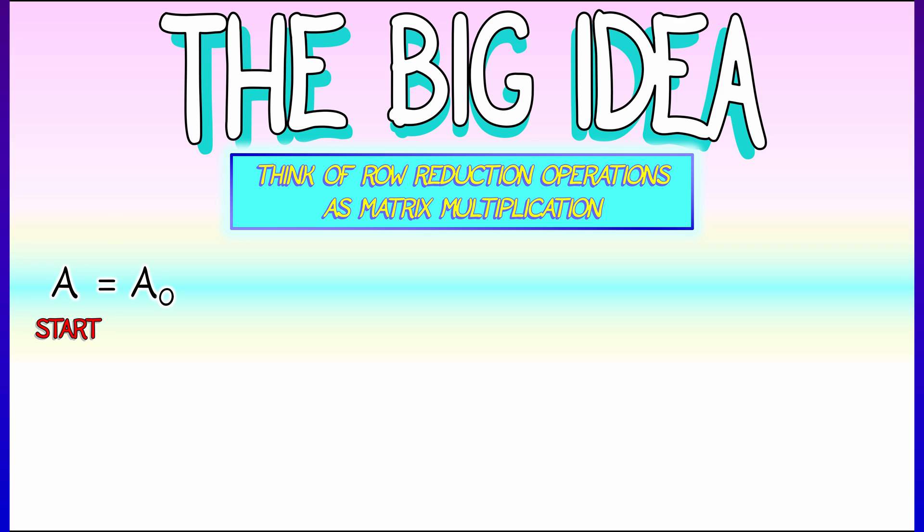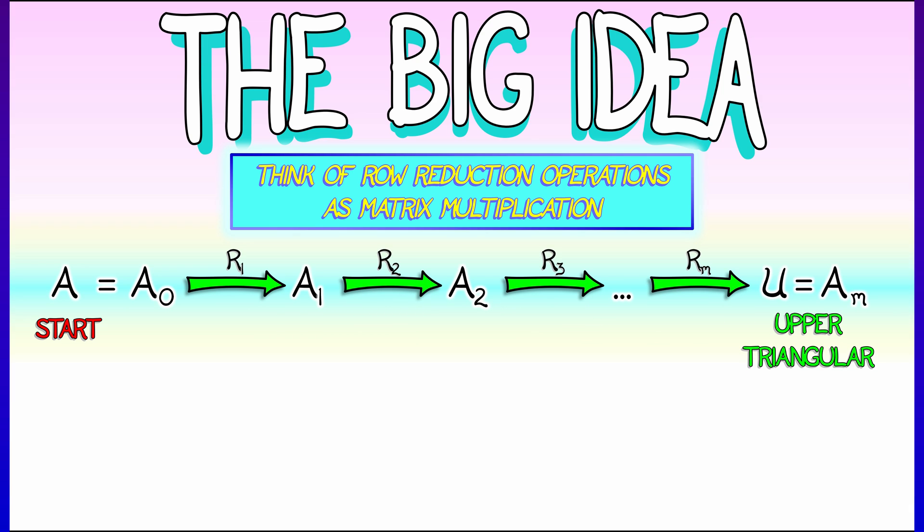We're going to start with our matrix A and row reduce it step by step. Let's use subscripts. Let's say we start with A_0, then we go to A_1, A_2, all the way up through A_m, which is an upper triangular matrix.